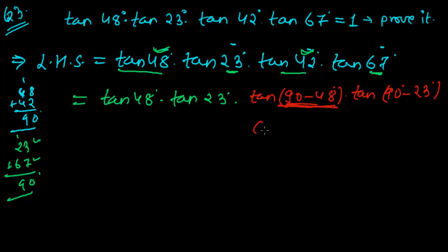And we know that tan(90° - 48°) equals cot 48°, and tan(90° - 23°) equals cot 23°, because we've learned that tan(90° - θ) equals cot θ.